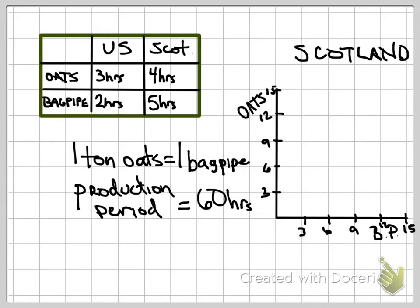Hopefully this is going to bring some clarification to the problem we were working on in class today that we didn't quite finish — that will help bring clarity to comparative advantage, absolute advantage, and benefits of trade between the United States and Scotland when we were looking at the example of oats and bagpipes. I believe this is number four on the worksheet. So let's get started.